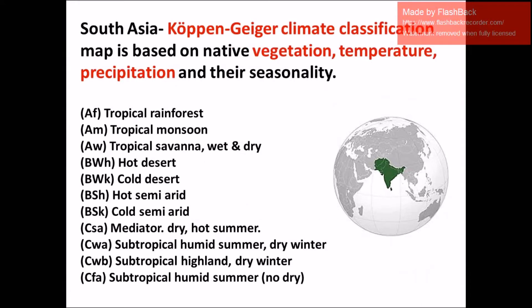The climate of South Asia can be classified on the basis of the Köppen climate classification. This map is based on native vegetation, temperature, and precipitation and their seasonality. Here is the classification given by the Köppen climate system.